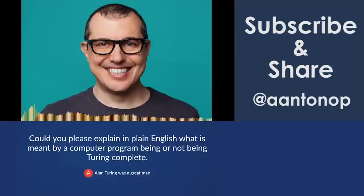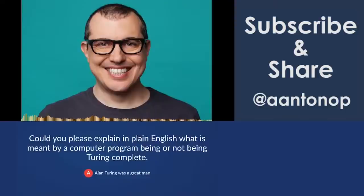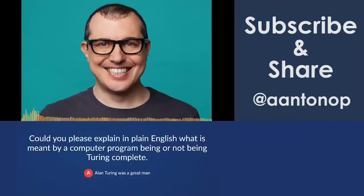Anyway, let's go to the question: what is meant by a computer being or not being Turing complete? The simplest way I can explain this is that a Turing complete program, or programming language that allows you to operate Turing complete programs, is one where the program can express all possible programs. Alan Turing created this concept of a universal Turing machine, which is basically a theoretical computer that can run any program.